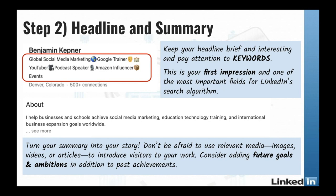You can also see I've got an about section. The first sentence should tell people exactly what you can do for them. Think about who you can help, what type of value you offer, and what your focus is. Mine is simple: 'I help businesses and schools achieve social media marketing, education, technology, training, and international business expansion goals worldwide.' Turn it into a story — be personalized and authentic. You can use relevant media like images, videos, or articles to introduce visitors to your work. Consider adding future goals alongside past achievements.